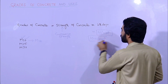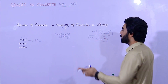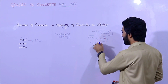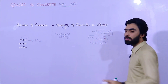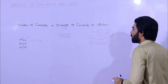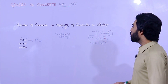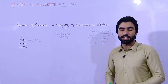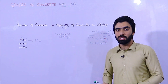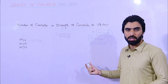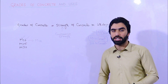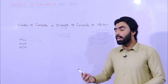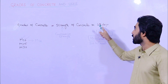For example, M20 means 20 Newton per mm² compressive strength after 28 days. To find the compressive strength of concrete, we use a compression machine to test after 7 days, 14 days, 21 days, and finally 28 days.